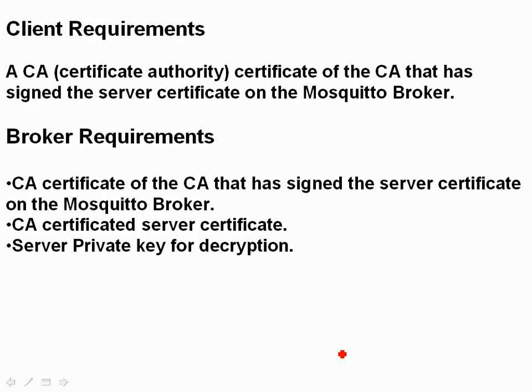The client requirement is the certificate of the CA that has signed the service certificate on the Mosquitto broker — that same CA certificate is what we'll copy over to the client. For the broker, we need the CA certificate, the CA-certified service certificate, and a private key for decryption.